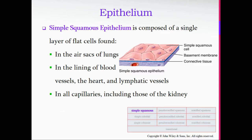Let's talk about the different kinds of epithelial tissue and where you find them. The simplest is simple squamous — a single layer of flat cells. We find them in the air sacs of the lungs called the alveoli, in the lining of blood vessels where gases and nutrients need to diffuse, in the lining of the heart and lymph vessels, in all capillaries where gas exchange takes place at the tissue level, and in the filtering part of the kidney.